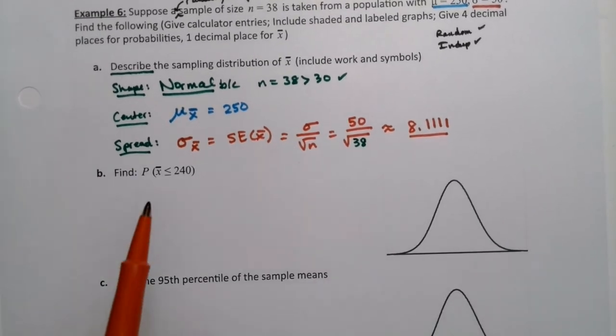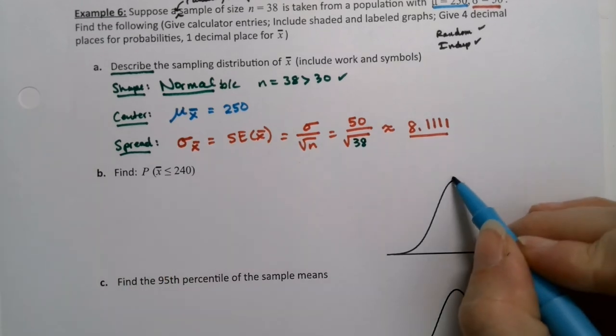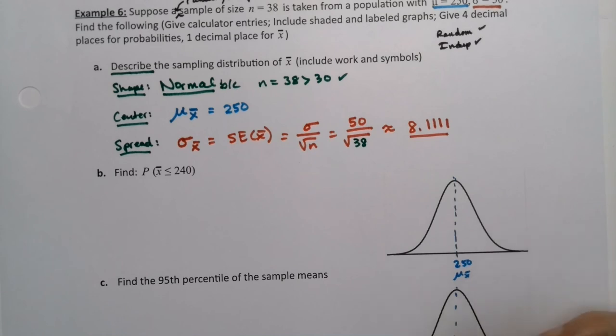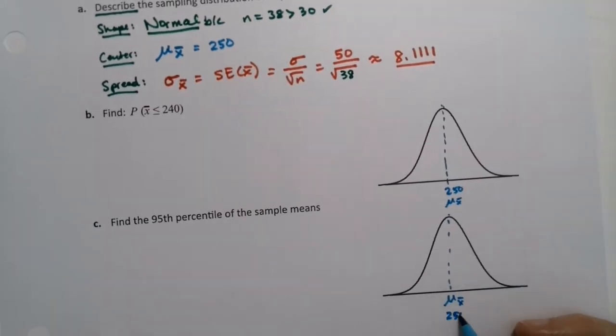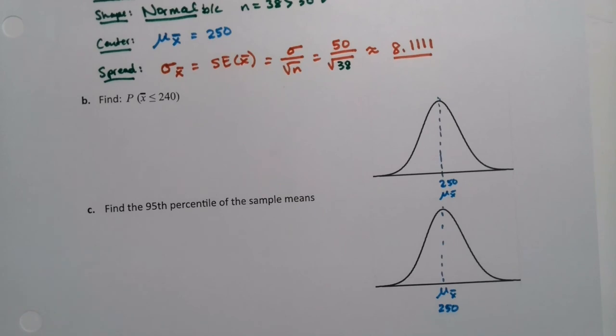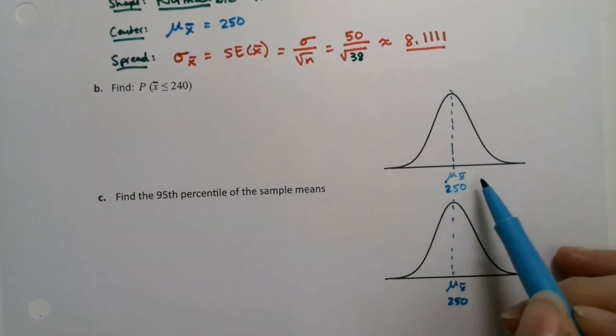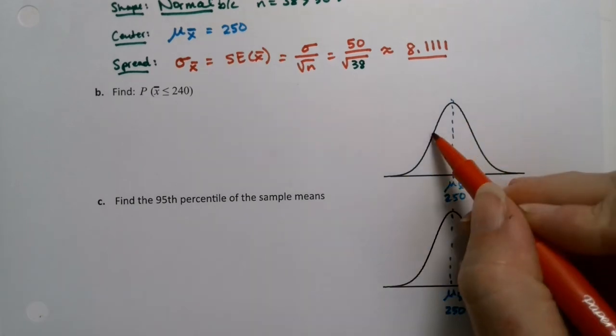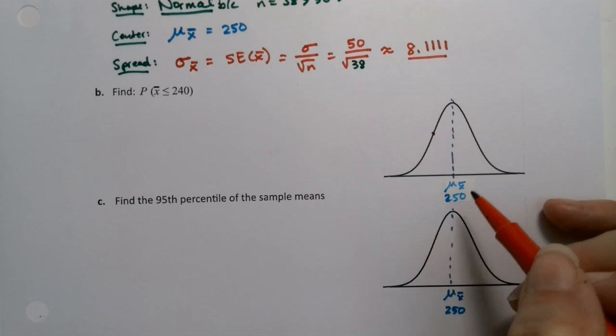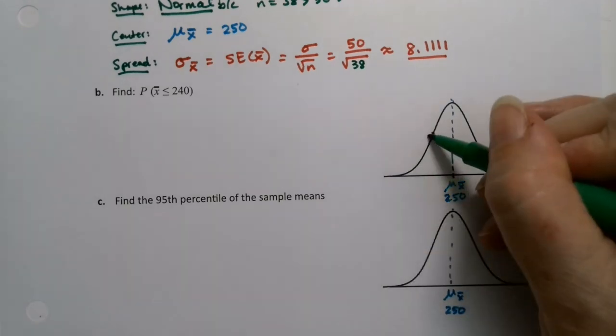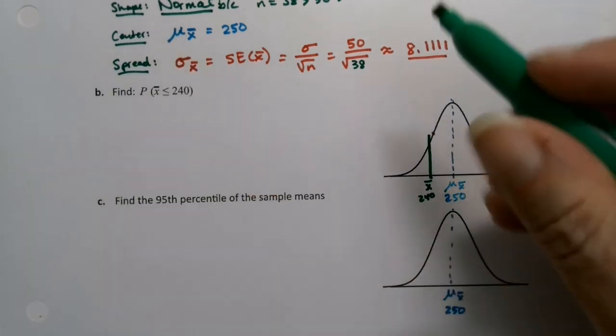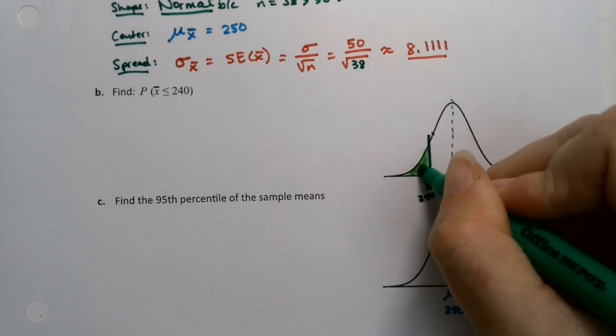Now they want us to find the probability that x-bar is less than or equal to 240. We just said the center of both of these curves is 250. That's the mean of the x-bars. The mean of the x-bars is 250. Now 240, where is that? That's 10 away. Keep in mind, the inflection point happens at about 8.11 away. So that'd be like 242 or so. So 240 is to the left of that. That's x-bar, which is 240. And then they want us to be less than. So I'm going to shade to the left right here because it has a less than sign.